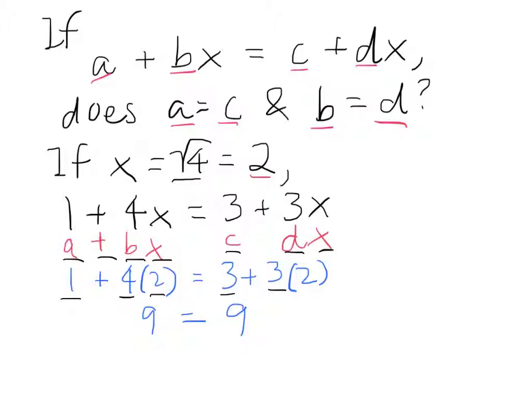Now, when we look at it, so obviously 1 plus 4 times 2 equals 9. 3 plus 3 times 2 also equals 9. But very clearly, a does not equal c. 1 and 3 are not the same. 4 does not equal 3.